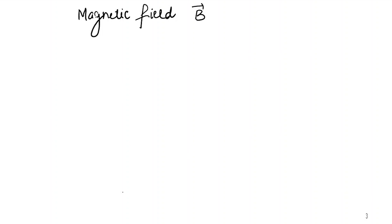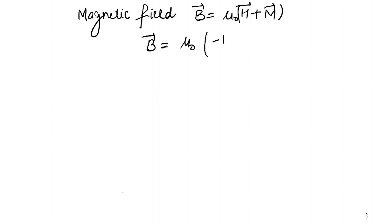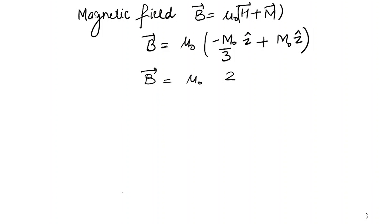Now for the B field inside, we use B = μ₀(H + M). Since we are inside the sphere, the magnetization is M₀ in the Z direction. Substituting H = −M₀/3 ẑ and M = M₀ ẑ, the calculation gives B_inside = (2/3) μ₀ M₀ ẑ.